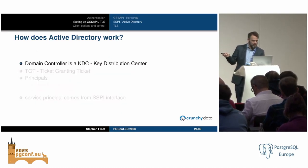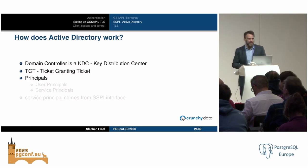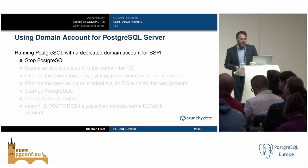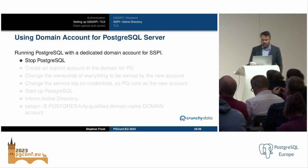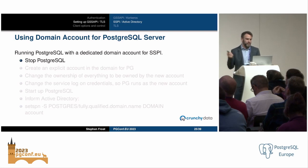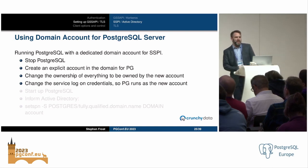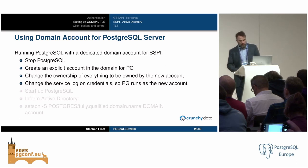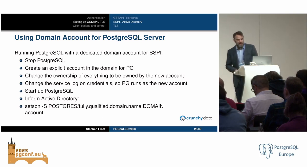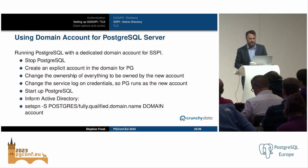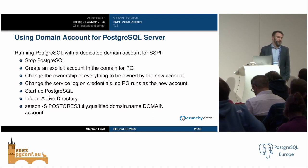In terms of Active Directory: there's a KDC, ticket-granting ticket, user and service principals. Service principals come from the SSPI interface. A couple of options on Windows if you're running Postgres on a Windows server: you can use a domain account for Postgres by creating an explicit account in the domain, changing ownership, and changing the service logon credentials, then telling AD via setspn. You can also use a network service instead of a domain account — it's not as secure due to the shared account, but it's the default some installers use and a simpler setup.